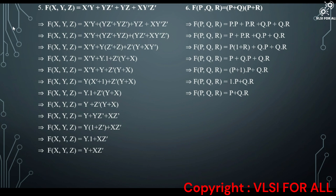Since Y · 1 = Y, we can write X̄Y plus X plus Z̄(Y plus X). Then we get Y(X̄ plus 1) plus Z̄(Y plus X). Since X̄ plus 1 = 1, we can write Y · 1 plus Z̄(Y plus X), giving Y plus YZ̄ plus XZ̄. Taking Y as common: Y(1 plus Z̄) plus XZ̄. Since 1 plus Z̄ = 1, we write Y · 1 plus XZ̄, and the simplified form of the Boolean expression is Y plus XZ̄.